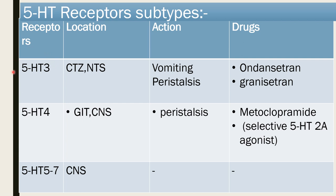5-HT3 receptors are present at the nucleus tractus solitarius and chemoreceptor trigger zone. Action is vomiting and increased peristalsis; ondansetron and granisetron inhibit the 5-HT3 receptor and block vomiting and decrease peristalsis. 5-HT4 receptors are present in the GIT and CNS and increase peristalsis; drug is metoclopramide, which is a selective 5-HT4 agonist. 5-HT5 to 7 receptors are present in the CNS.